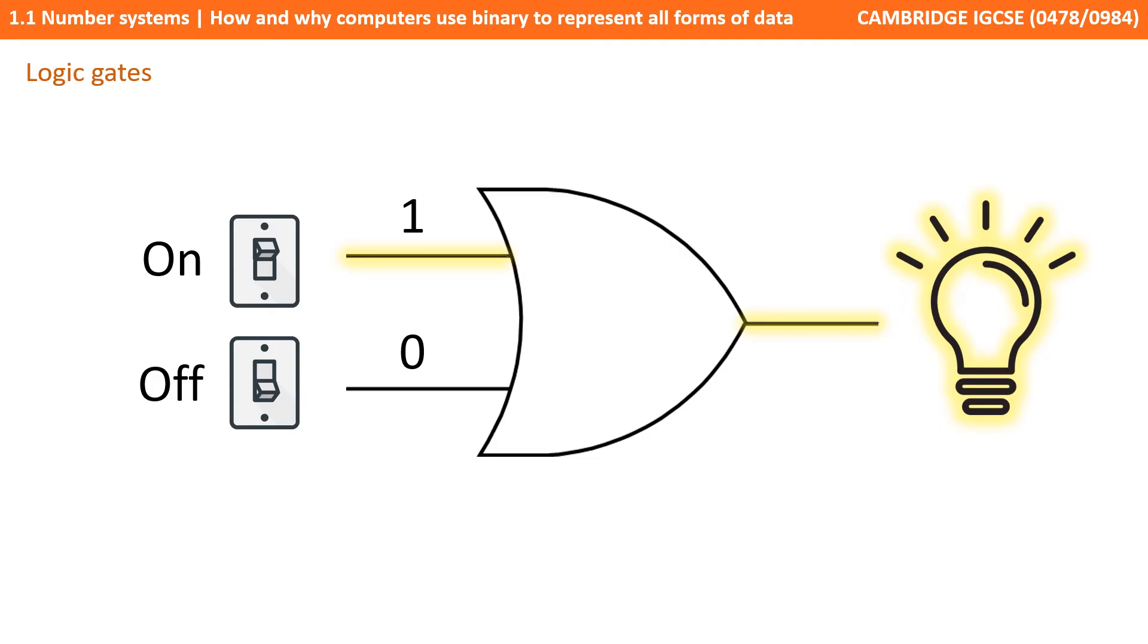Now this is handy because switches can then be used in a computer to make use of logic gates. Here we see an OR logic gate. Now we'll be going into logic gates in a lot more detail in other videos. But for now we can see how binary switches and logic gates all work together really well to make computers work.